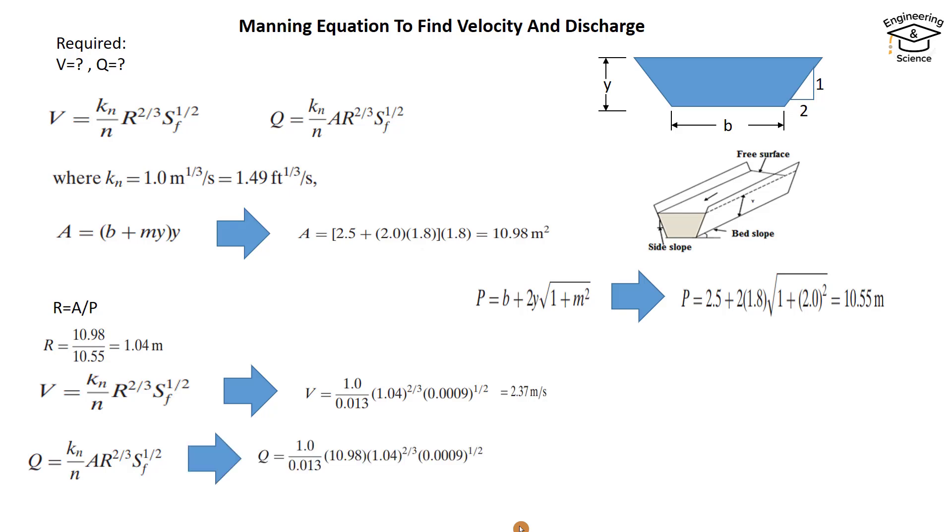Just put the values. We have everything; we just add the area 10.98 to find the discharge. So we get the result: 26 m³/s. That's all. I hope it can be helpful. Have a nice time.